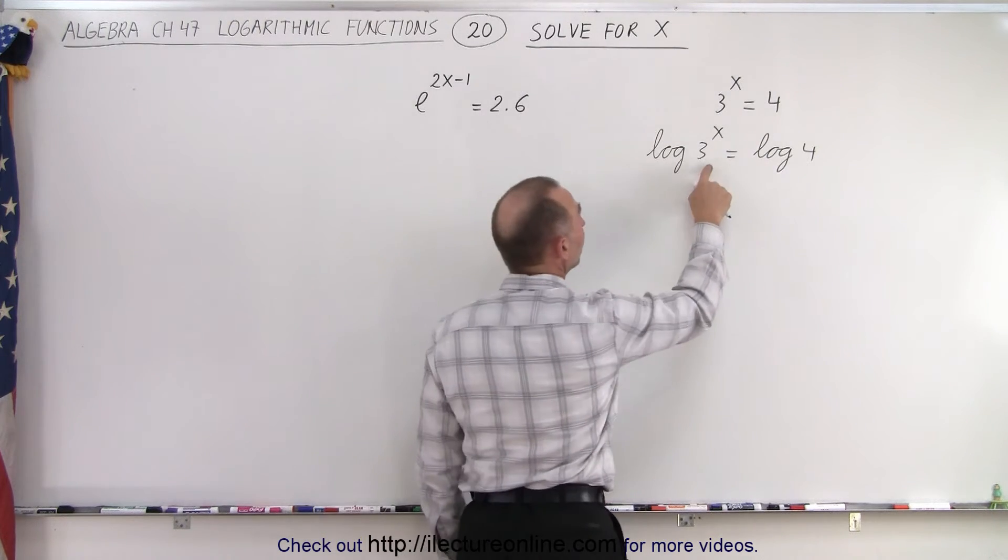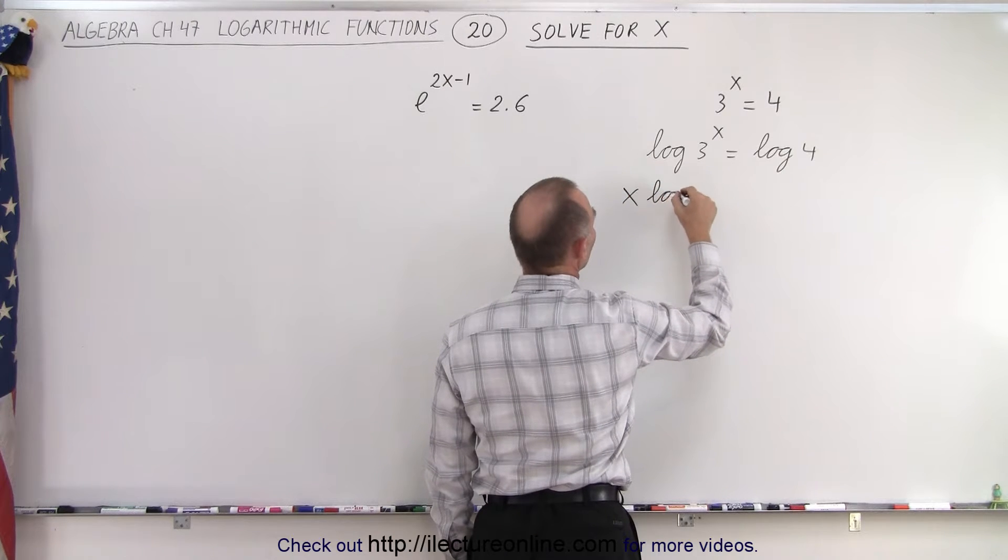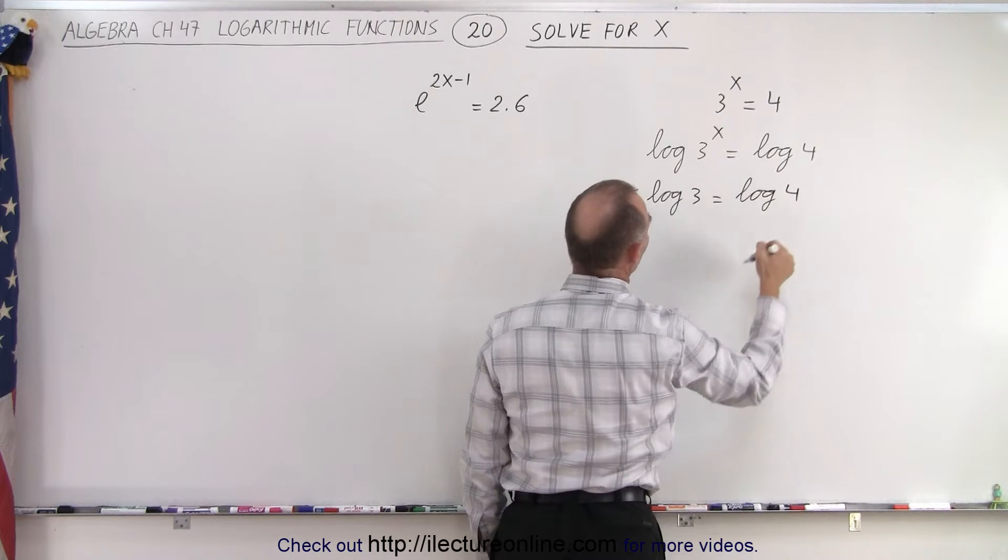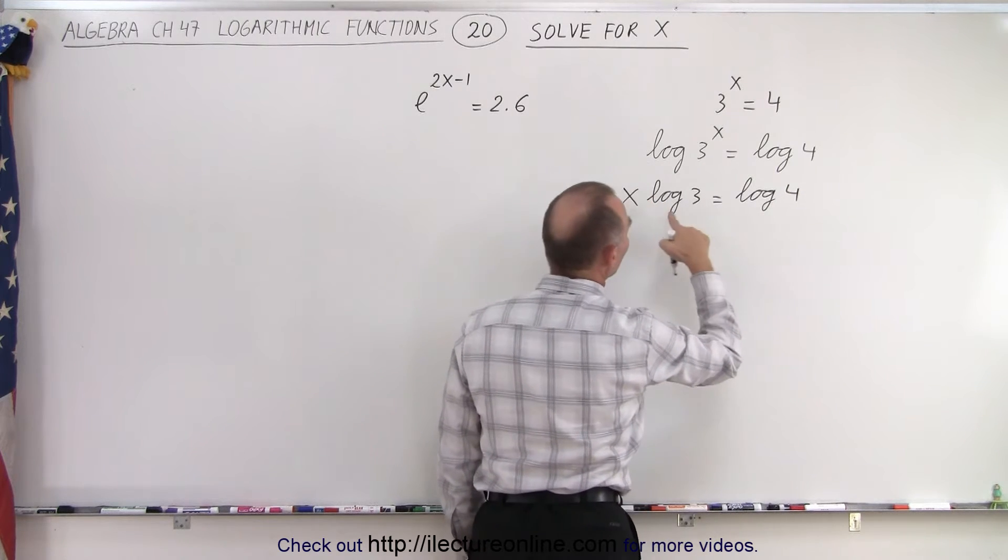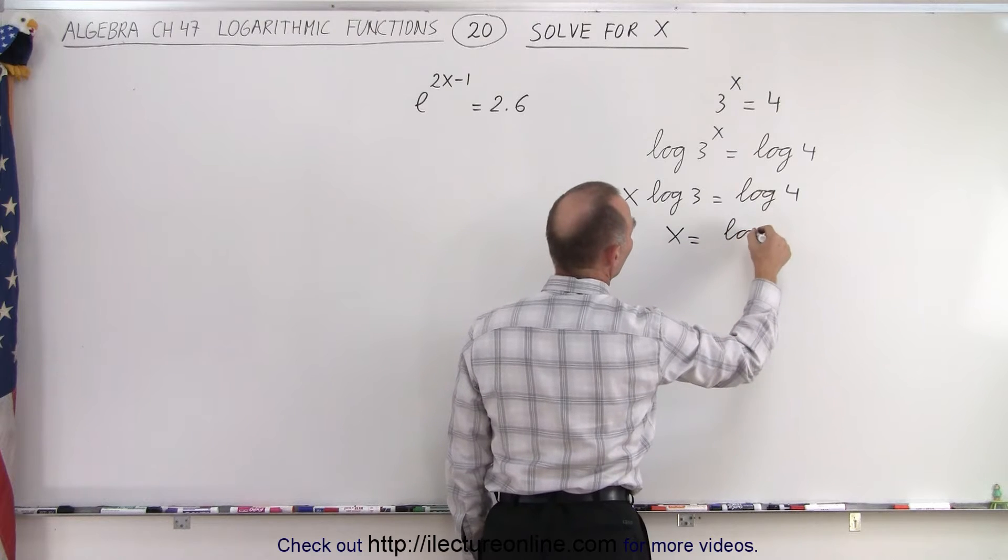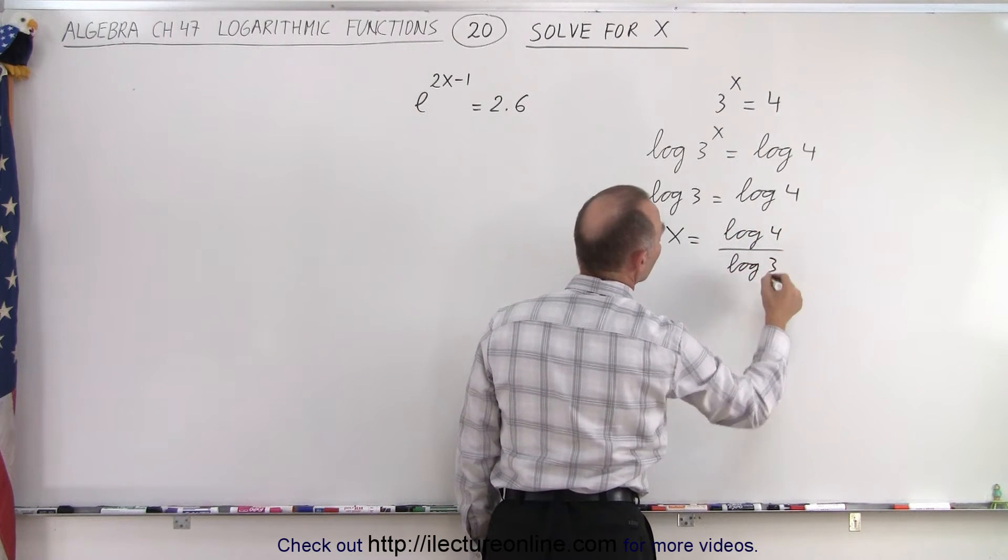Now we can use the power rule. We take the x and put it in front: x·log(3) = log(4). Now we divide both sides by log(3), so x = log(4)/log(3).